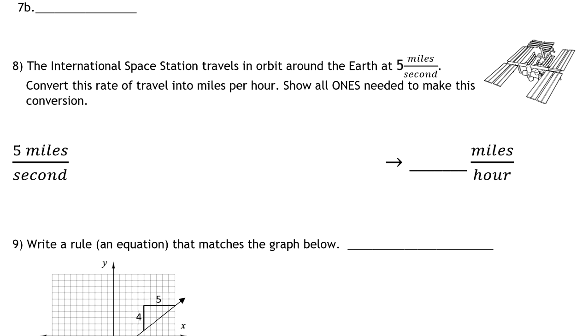The International Space Station travels around the Earth and orbits at a speed of roughly 5 miles per second—5 miles every single second. You're asked to convert this rate into miles per hour and to show all the ones needed to make this conversion.